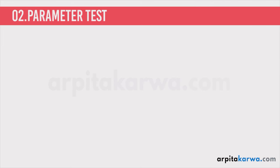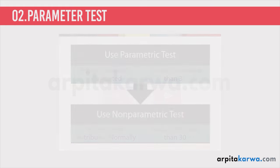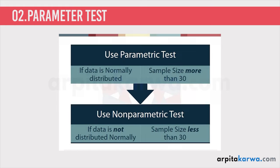Now that we have understood the importance of hypothesis testing, let us look at the ways in which we can test the hypothesis. There are two ways: parametric test and non-parametric test. Let us look at them one by one.